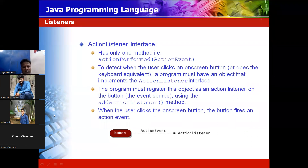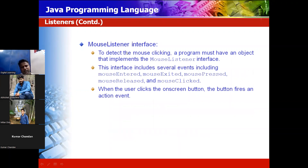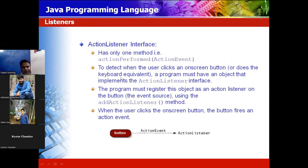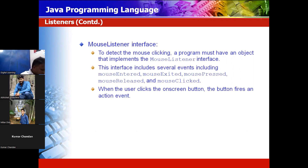ActionListener is not added by default — the addActionListener method is used for adding it. For the MouseListener interface, to detect mouse clicking, a program must have an object that implements MouseListener. This interface includes several events, including mouse entered — when the mouse enters, the color changes — and mouse exited — when the mouse leaves the application, the color changes.